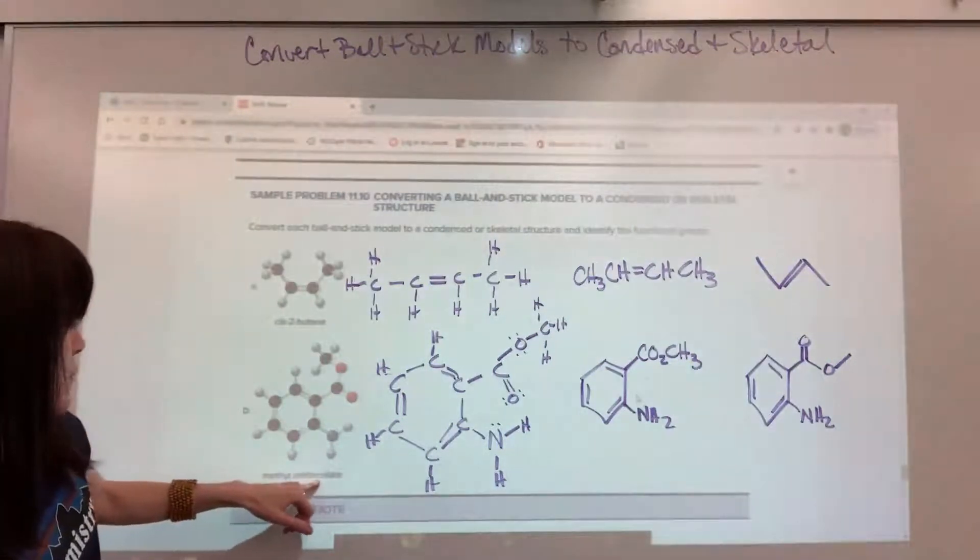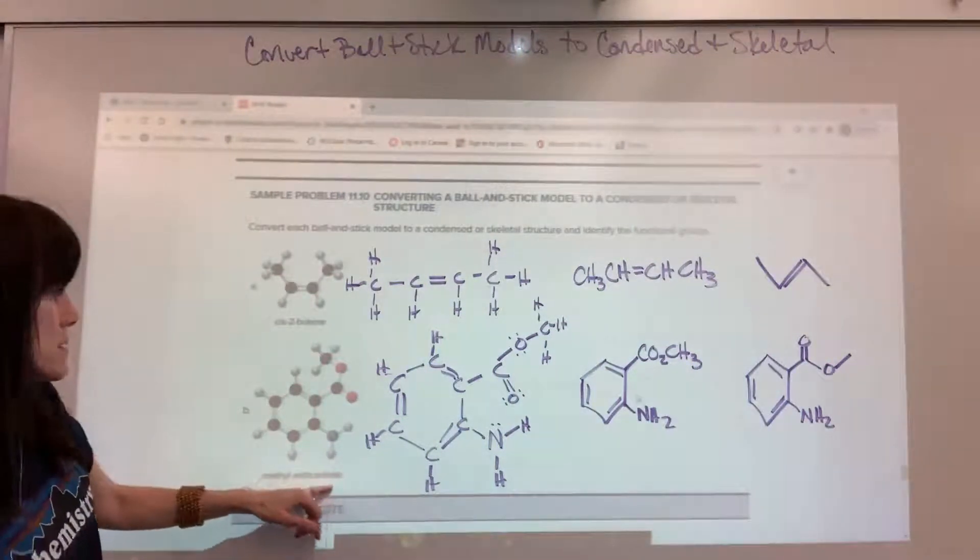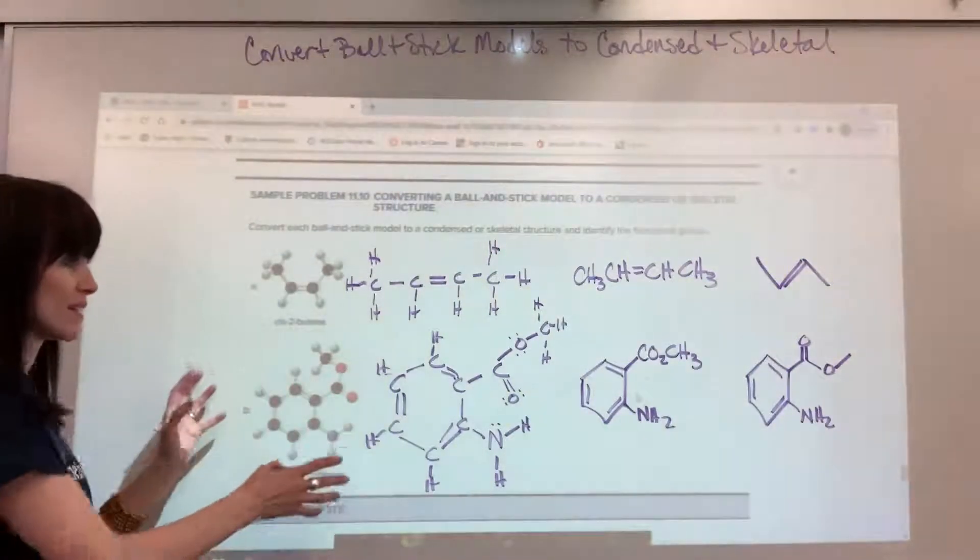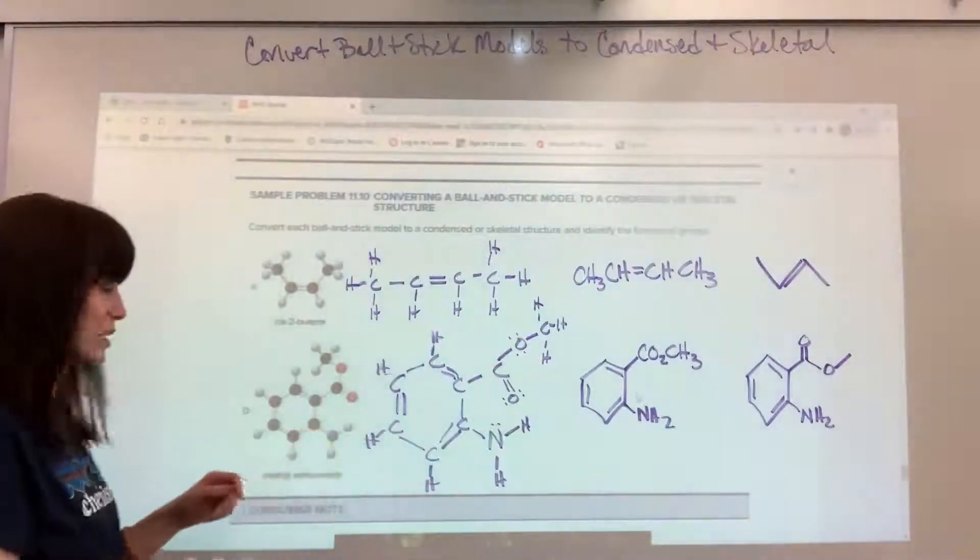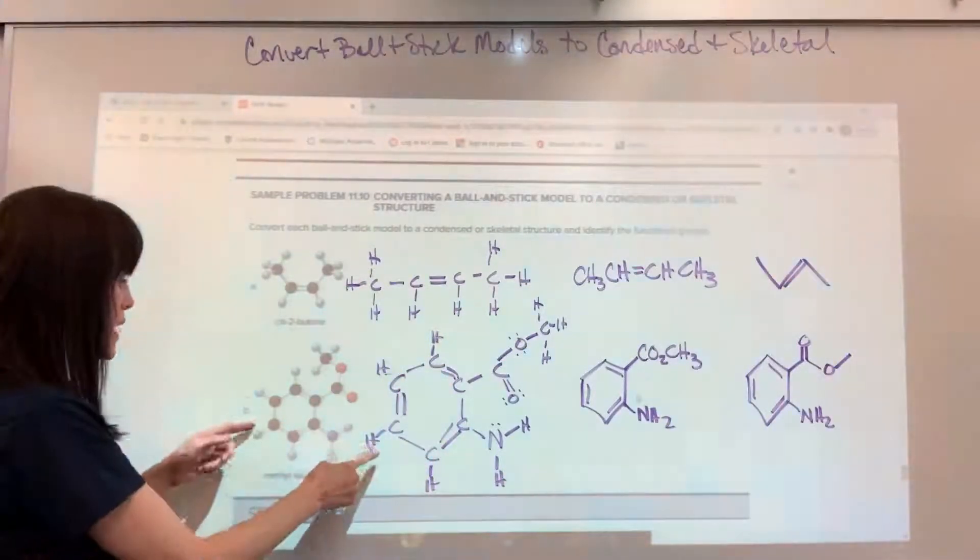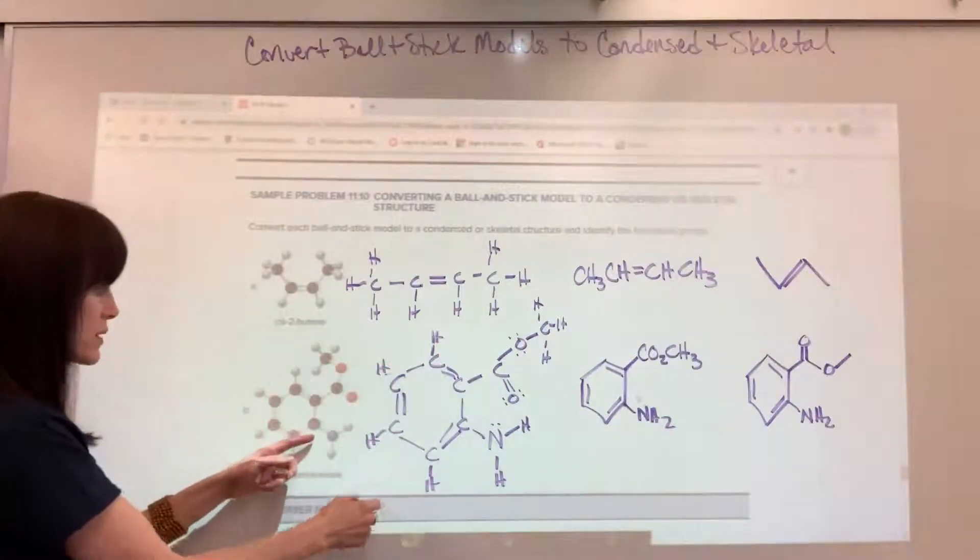This is methyl anthranolite—sorry, should have practiced that. Okay, look at this great big complete structure. So we've got the carbon in this aromatic ring, the benzene ring, and you can see the hydrogens attached to it.